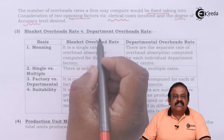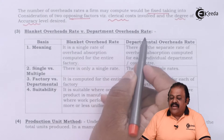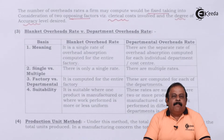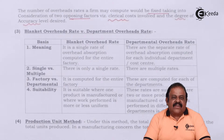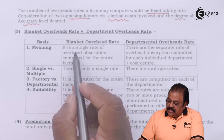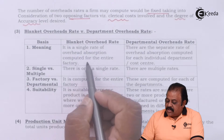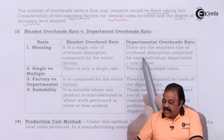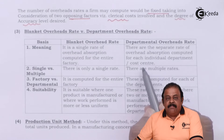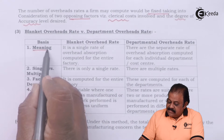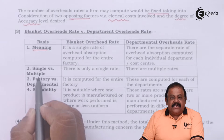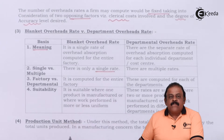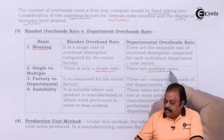Blanket overhead rate versus departmental overhead rates — here we can discuss some comparative points to understand the positive and negative factors relating to each method. A blanket rate is a single rate of overhead absorption computed for the entire factory, while departmental rates are separate rates computed for each individual department or cost center, involving the use of multiple rates.